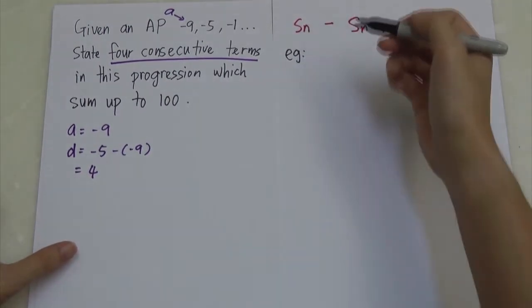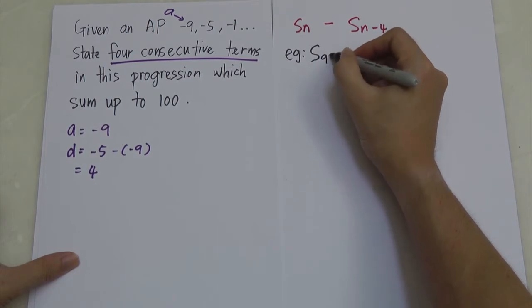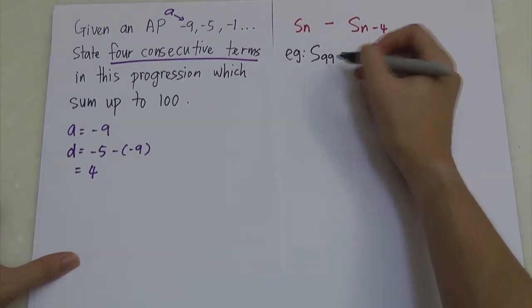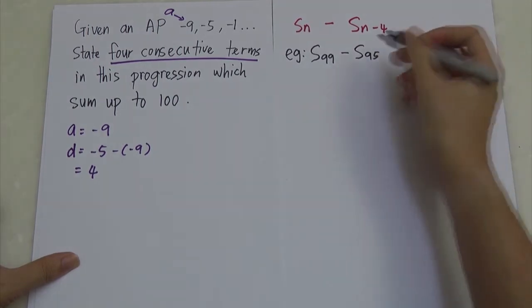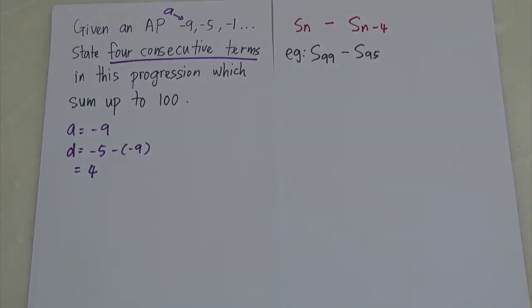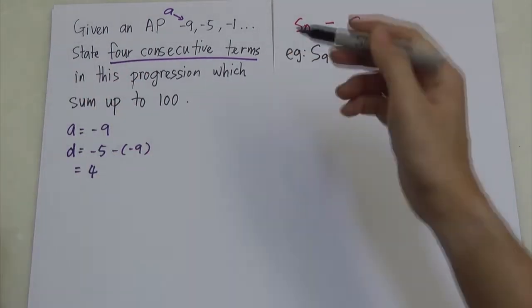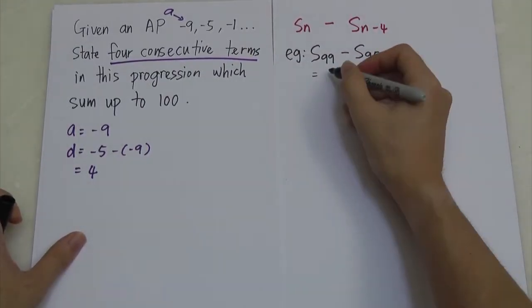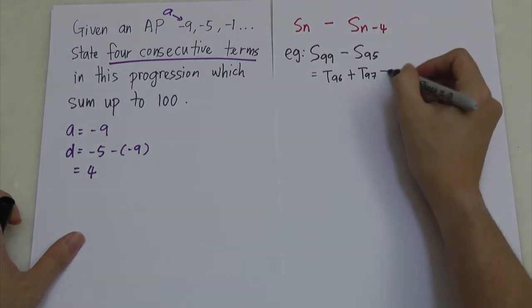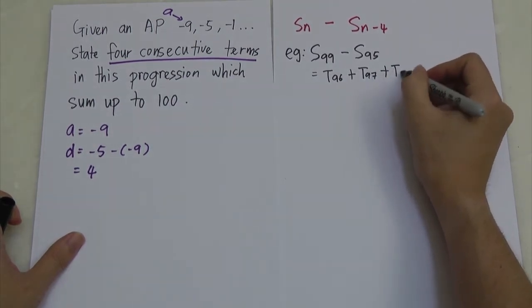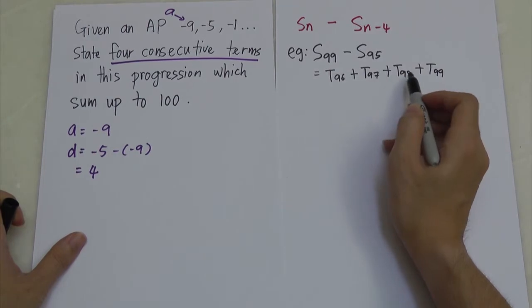Let me use an example. Let's say I put N as 99. So sum of 99 terms minus S(99 minus 4), which is S95. What you get is: sum of the first 99 terms minus sum of the first 95 terms — that gives you the 96th term plus the 97th term plus the 98th term plus the 99th term. That is what we mean by consecutive terms.